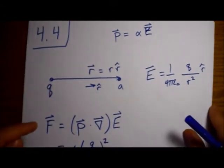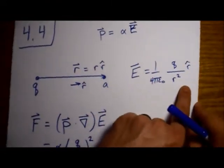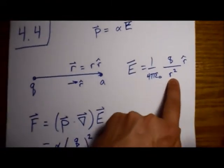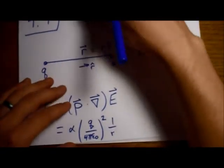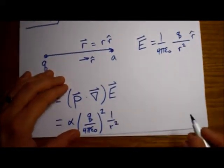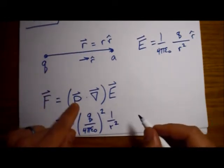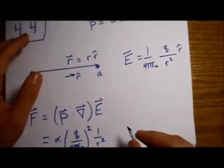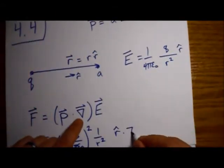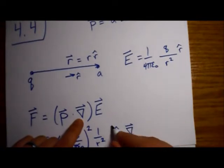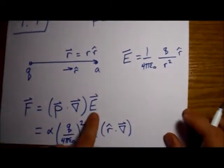Alright, from this p again we had the alpha, and then we had this E here. So we still have this r squared that we have to deal with. R squared, okay, that's from this p. And then we have this r hat.